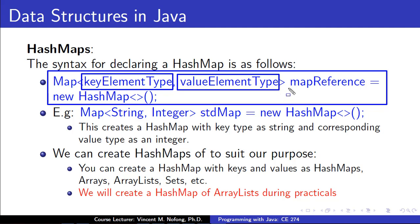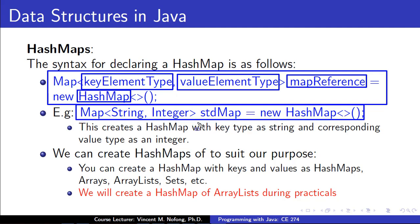Similarly for the value type — is it an integer, string, boolean, or whatever we want? We need to give our map a name so that we can reference it or access it in our code. When we say 'new HashMap' we are telling the constructor that we want a HashMap, not a TreeMap. For example, if we want to create a HashMap that will store student names and their marks, a student name is a string, so we create a HashMap called studentMap specifying the key as a String and the value as an Integer.